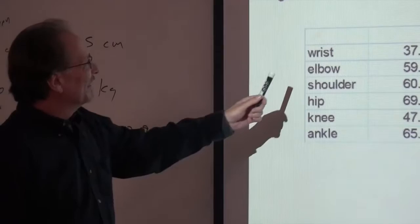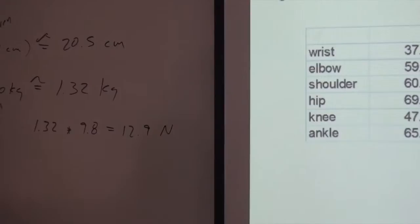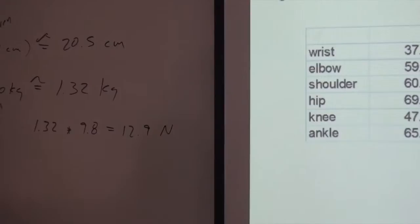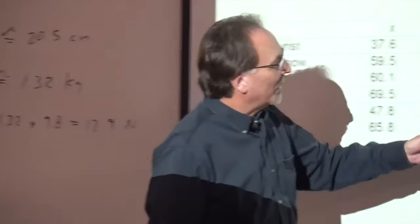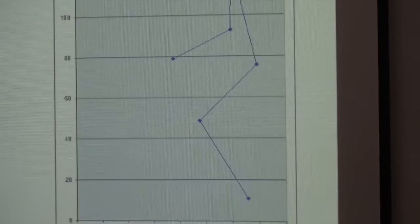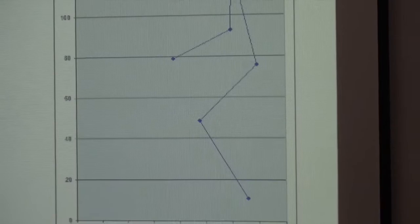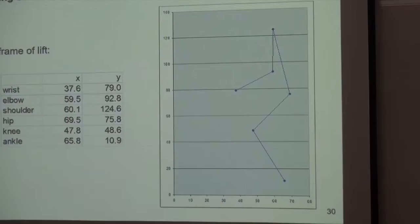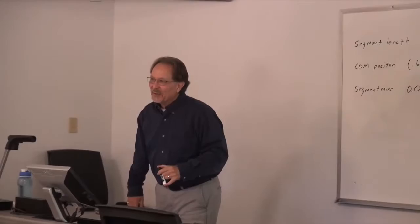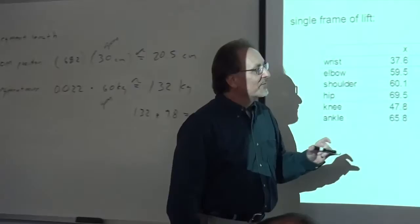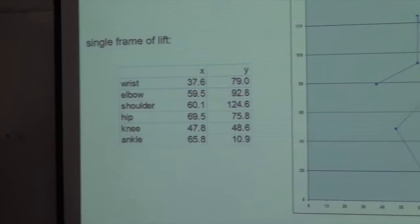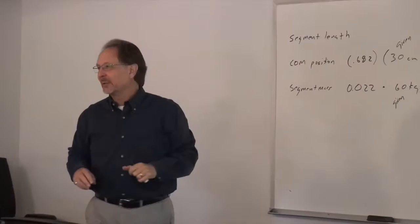So what we have for a single frame — for a sagittal co-planar lift — you know what the XY position is for the wrist, elbow, shoulder, hip, knee, and ankle. If I graph it, that's what it looks like — it's a stick figure of the person in one frame of the lift. So if I take one frame out of your data and graph it, that's probably what it looks like.